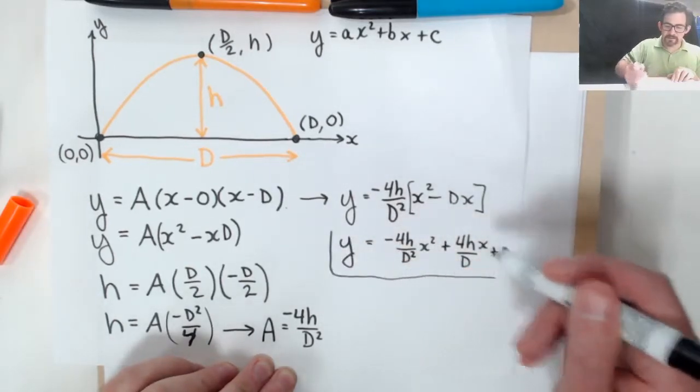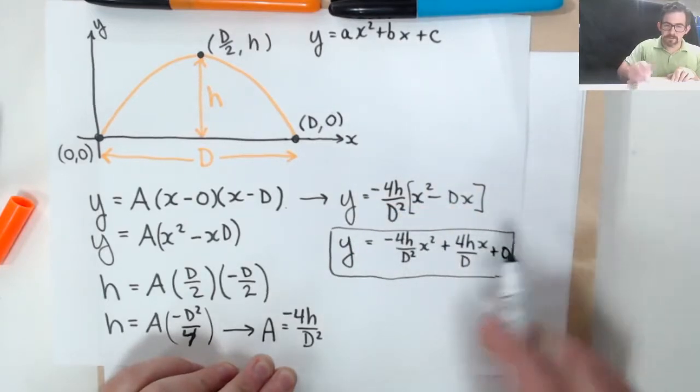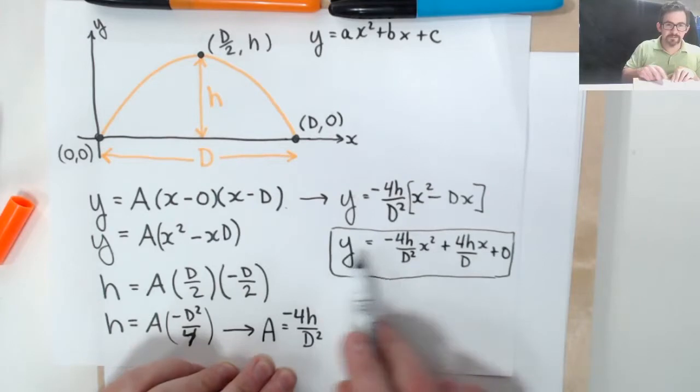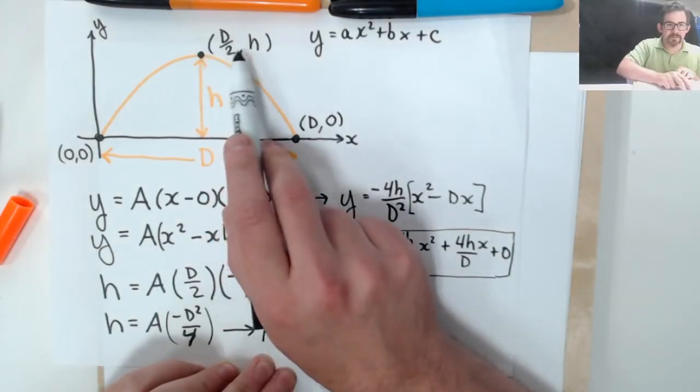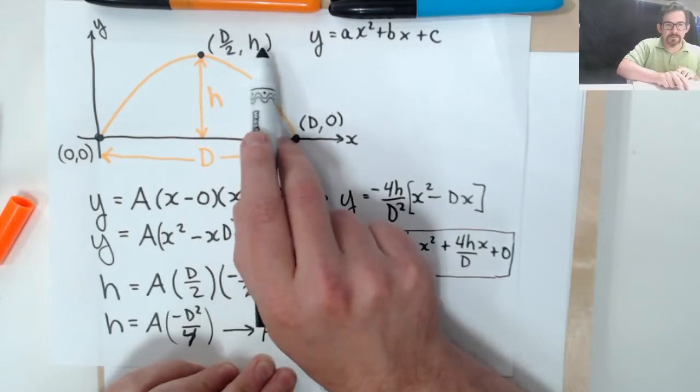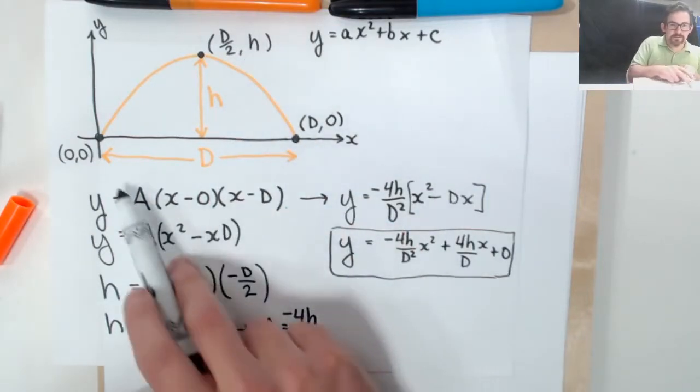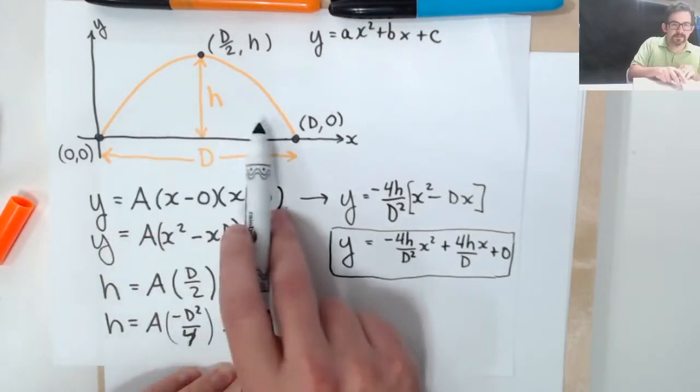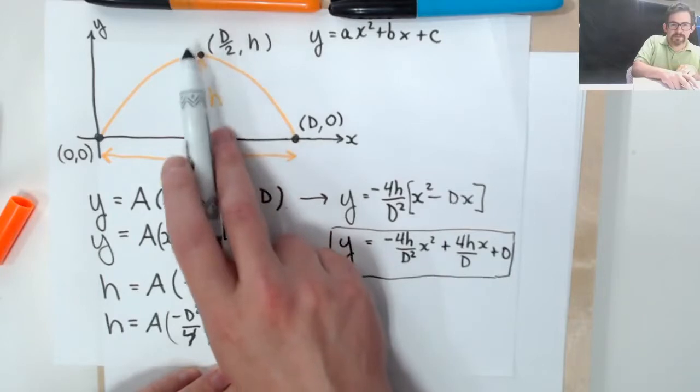So this is how we get a standard form. This is a certain kind of vertex form, because the point that we gave this is called the vertex of the parabola, and it is d over 2 comma h. And this is how we get a parabola that has two x-intercepts at zero and d, and the vertex at that point that we specified.